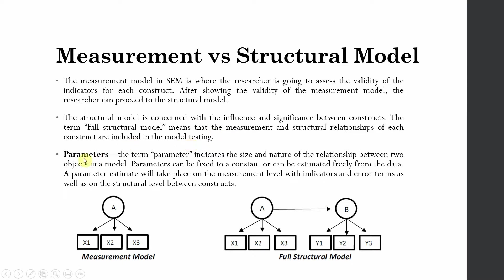An important terminology is 'parameters,' which you will come across a lot in IBM SPSS AMOS. The term parameter indicates the size and nature of the relationship between two objects. Parameters can be fixed to a constant or estimated freely in the data. When estimating our measurement model, one indicator's parameter is fixed while others are estimated freely.